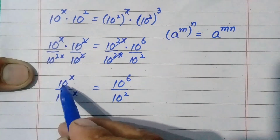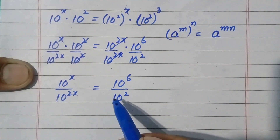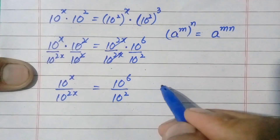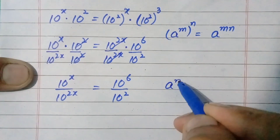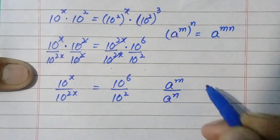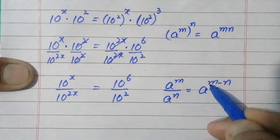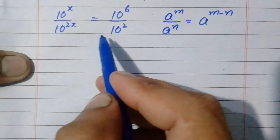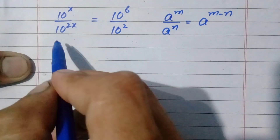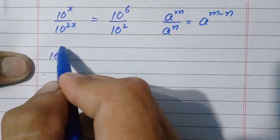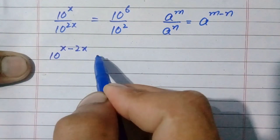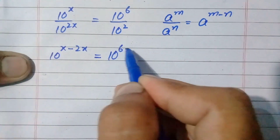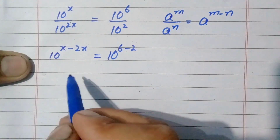Now both sides have the same base, so we use the quotient with same base formula: a power m divided by a power n equals a power m minus n. Applying this formula on both sides, the left side becomes 10 raised to power x minus 2x, and the right side becomes 10 raised to power 6 minus 2.